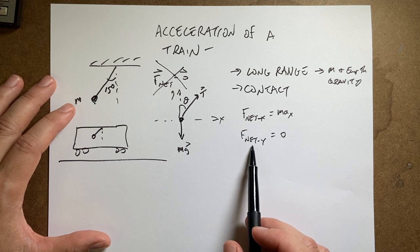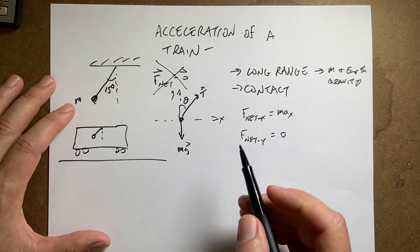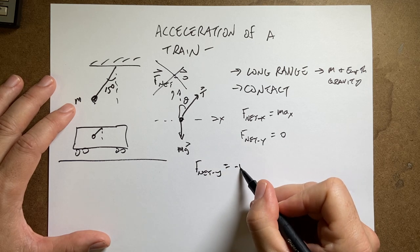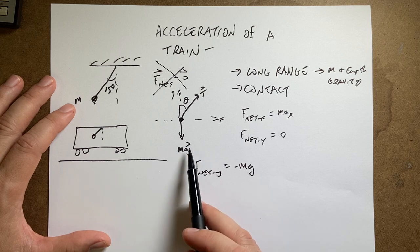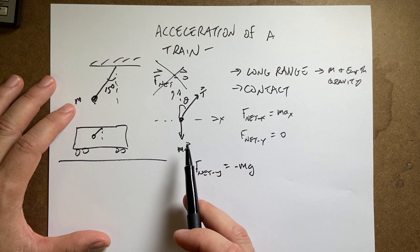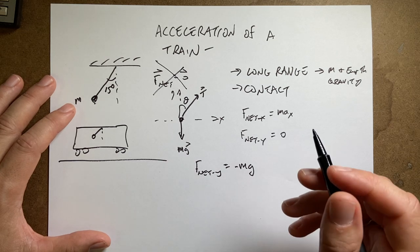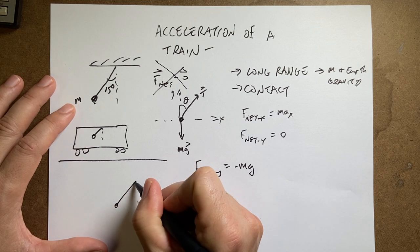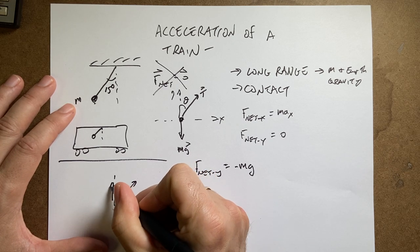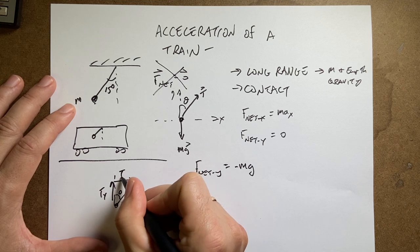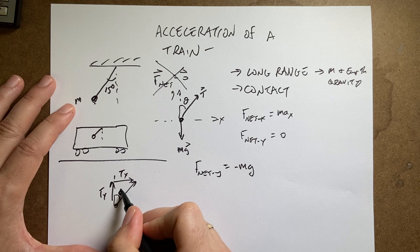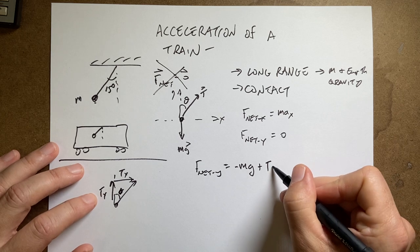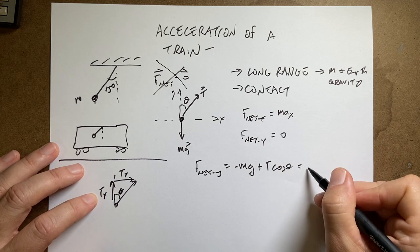Okay, so what forces are acting in the y direction? Well, I have the gravitational force pulling down. So I can write F net y equals negative mg. And you'll notice here that's not negative because that's a vector. It's pointing down and it's in the negative y direction. But we don't say that's a negative. And then I have a component of this tension pulling up. So if I draw that tension force, there's t, there's theta. That's t in the y direction. That's t in the x direction. That's theta. So that's the adjacent side. So I'm going to get plus t cosine theta equals zero.